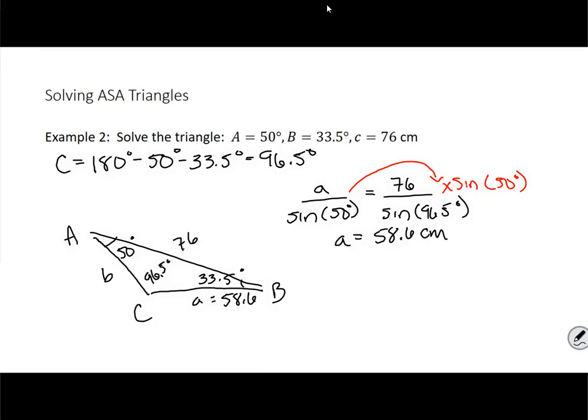So now we can do the same situation to solve for side B. Side B over the sine of angle B, which is 33.5, equals the ratio of 76, which is side C, and the sine of angle C, which is 96.5. All right. So now, once again, I just multiply both sides, in this case, by sine of 33.5.